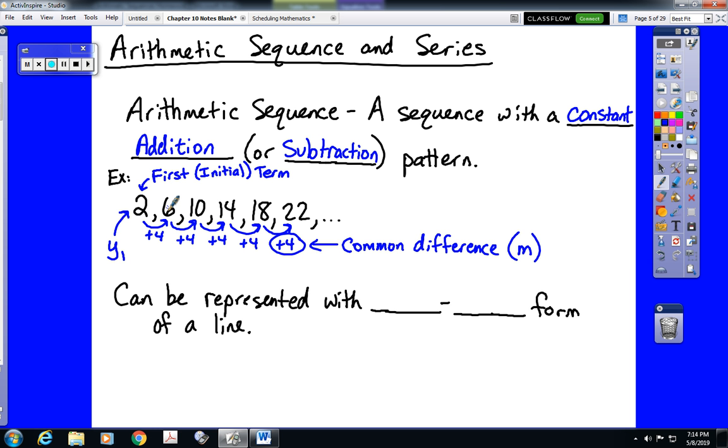Every single term in this sequence has a term number. For instance, 10 would be Y sub 3, the third term. 22 would be Y sub, what is that, 4, 5, 6, or the sixth term. Every term has a term number.